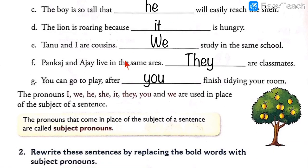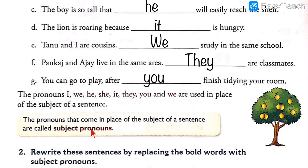All the pronouns we used in the above blanks are called subject pronouns because they take the place of the subject in a sentence. The pronouns that come in place of the subject of a sentence are called subject pronouns. The subject pronouns we have used are: I, we, he, she, it, they, and you. These pronouns are subject pronouns, and this concept should be clear in your mind.